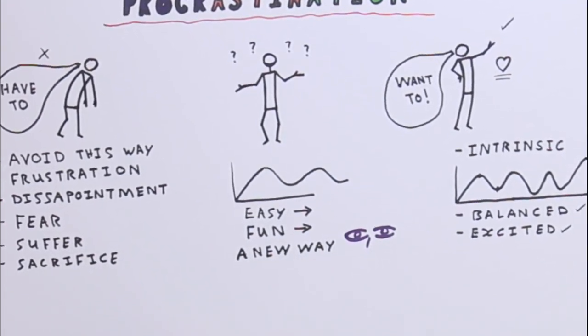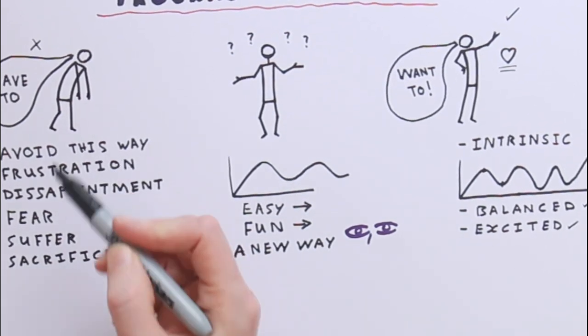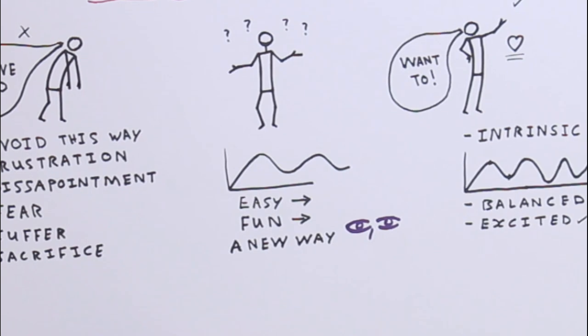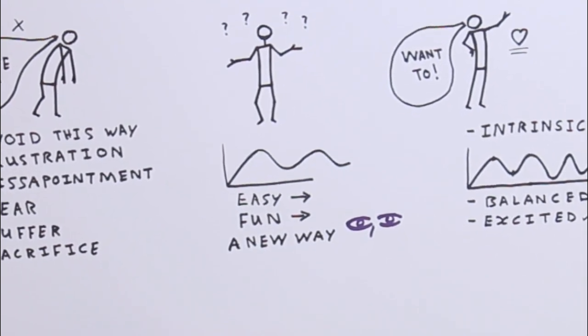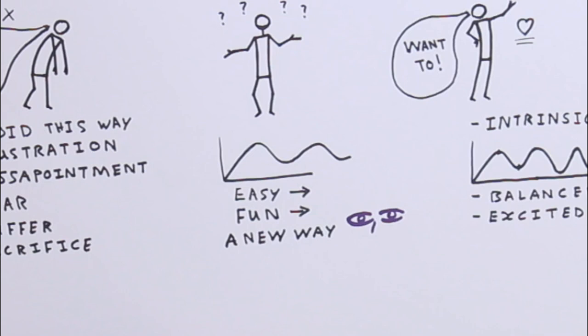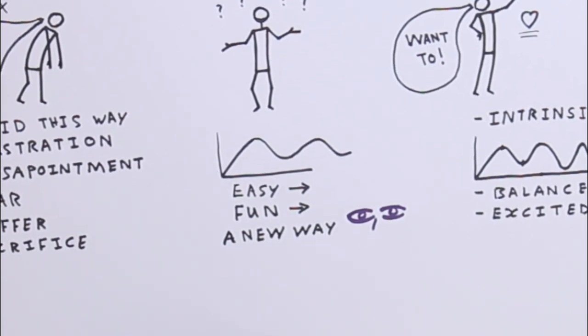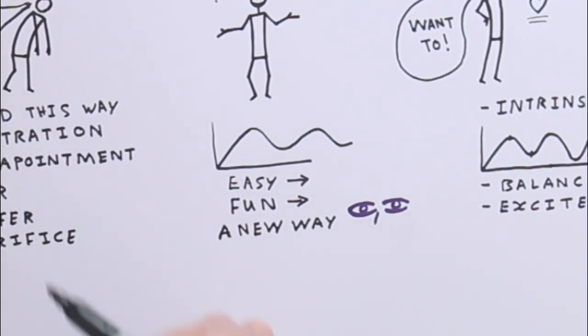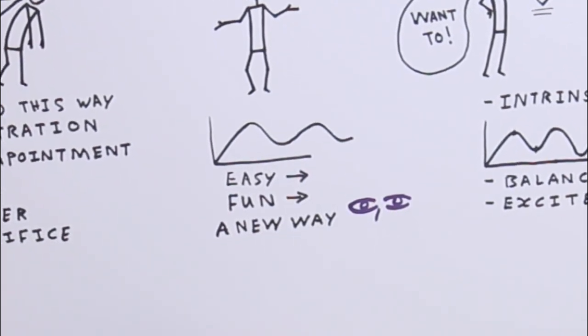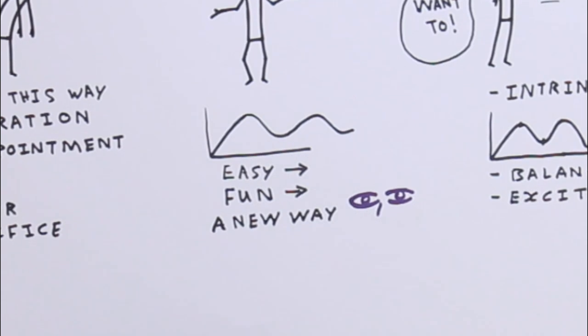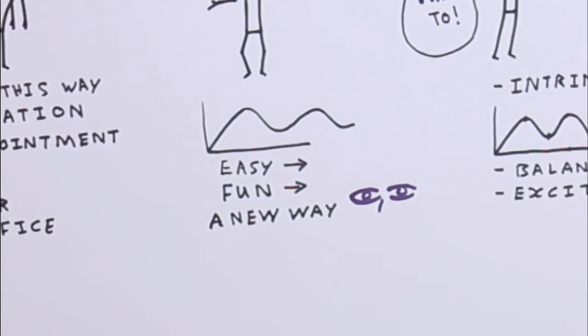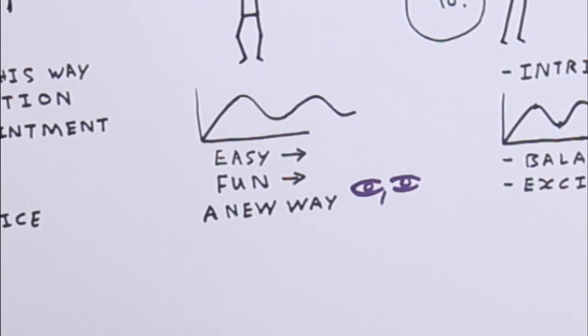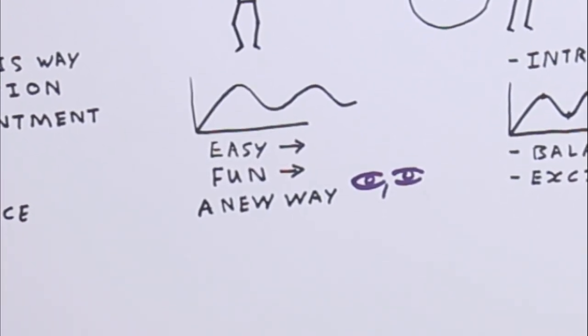So what does it involve? Get ready for a little shock here. Overcoming procrastination requires that you do absolutely nothing at all. I know it sounds pretty incredible, but it is the truth. You don't need to do anything to overcome procrastination. It simply involves changing the way you perceive personal productivity, looking at it differently.